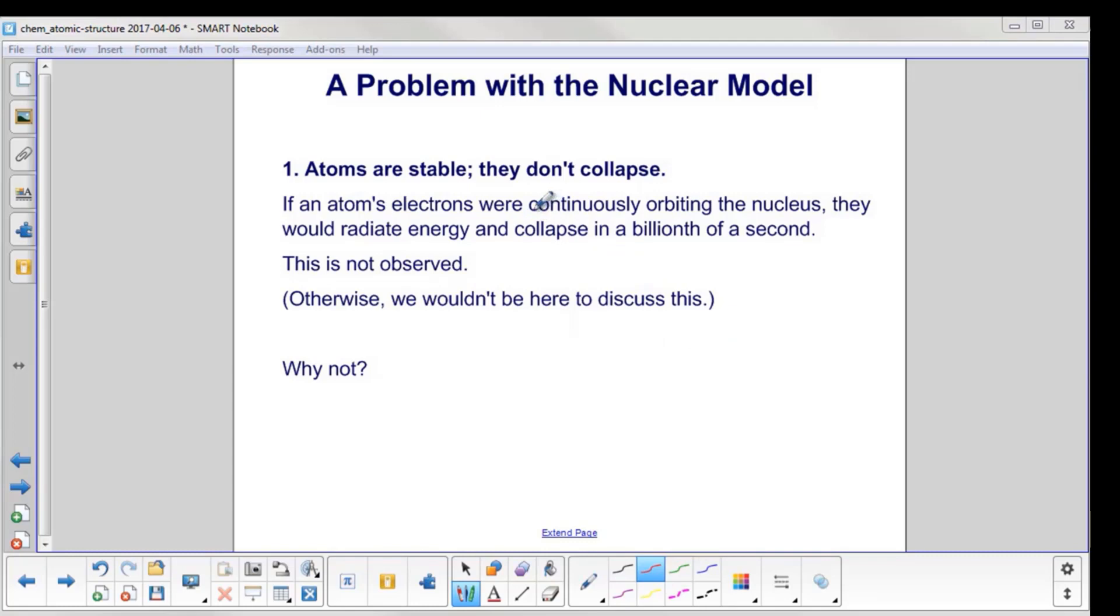However, with this model, if you have electrons constantly orbiting the nucleus, they would radiate energy and collapse in a billionth of a second. But we don't see it. Why not?